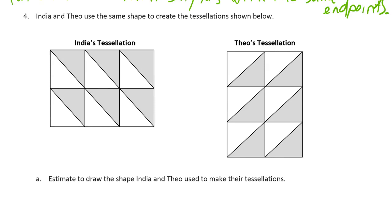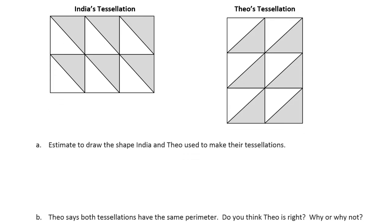India and Theo use the same shape to create the tessellations shown below. Estimate to draw the shape India and Theo use to make their tessellations. So we just have to figure out what is the unit they use. Because the whole thing about tessellation is that think of it like a tile. You're going to use it over and over again. In some cases it can be deceiving. But in this one it's pretty easy to see that this is the unit here. Just one of those.